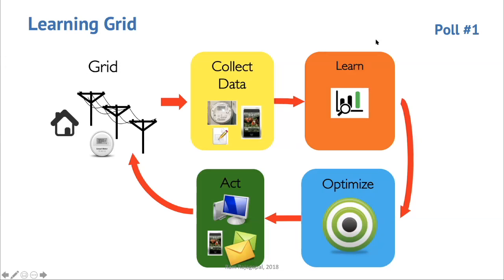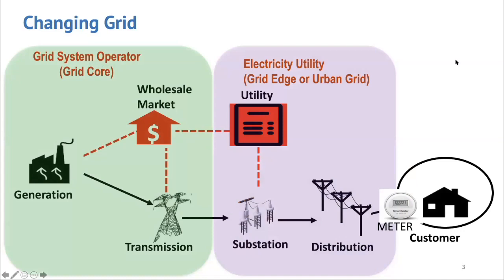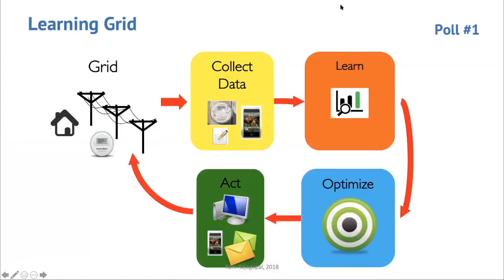I had a question: of these four activities — collecting data, learning, optimizing, and acting — what is the hardest to do in our electricity grids today? Whether you consider a utility, Tesla, or even CAISO, the California Independent System Operator. So 28% said collecting data, 13% said learning, 40% said acting, and 19% said optimizing. The two hardest steps are really collecting the data and taking actions.